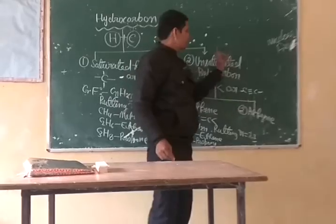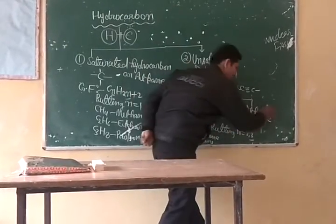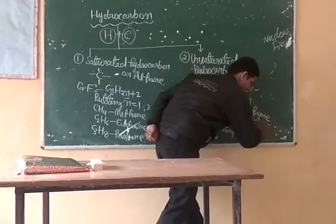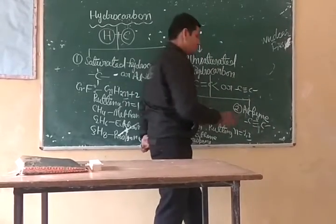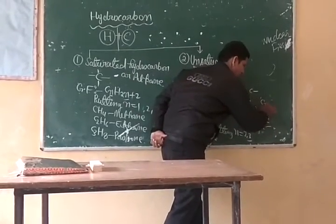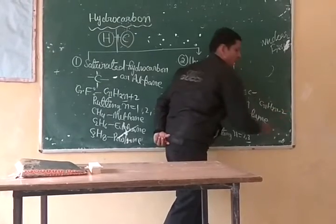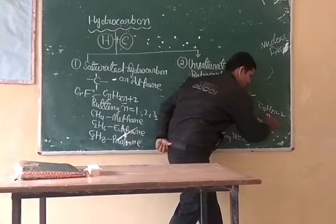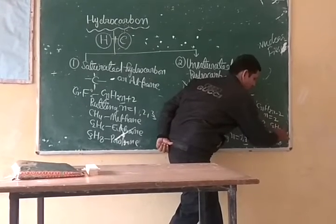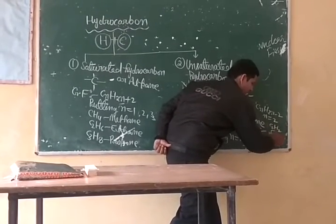Unsaturated hydrocarbon in which carbon atoms are connected by triple bond is called alkyne. The general formula of alkyne is CₙH₂ₙ₋₂. Putting n equal to 2, we get C₂H₂. It is called ethyne.